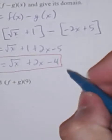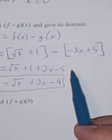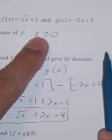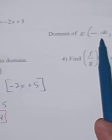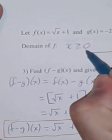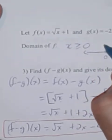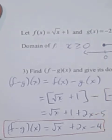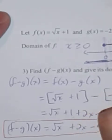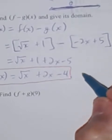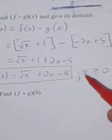Then we want to find the domain. The domain is the intersection of the two domains. f is only defined for x greater than or equal to zero. g is defined for all real numbers. So the intersection is x greater than or equal to zero. You can look at that on a number line — f is shaded from zero to the right, g is shaded all the way through. So only from zero on are they both shaded. The domain is x greater than or equal to zero.